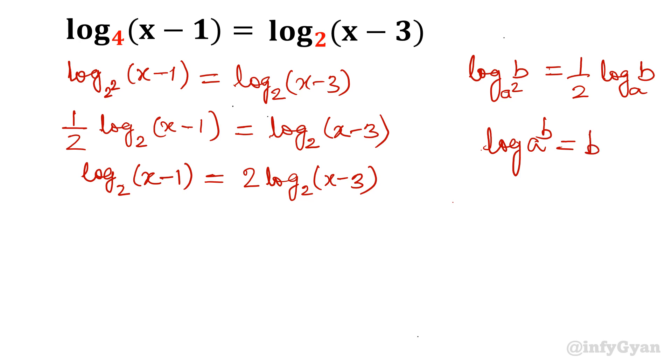Now I'll use another logarithm property: log of a^b equals b log a. That exponent will come as a multiplier. So this 2 will move to become an exponent, giving us log base 2 of (x-3)².